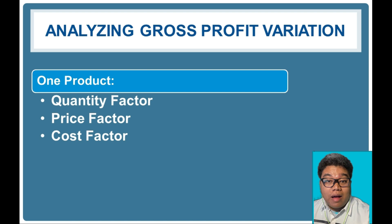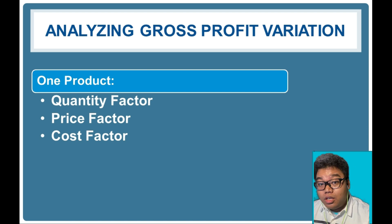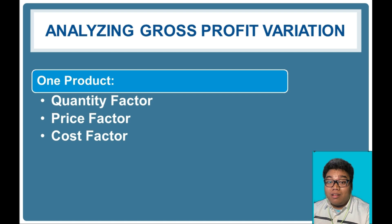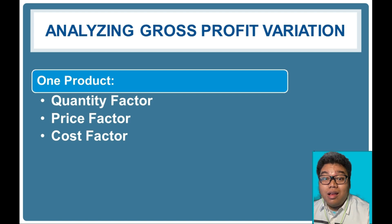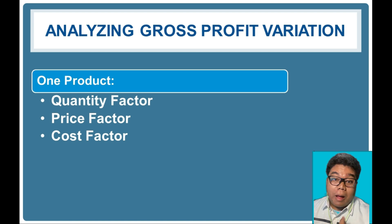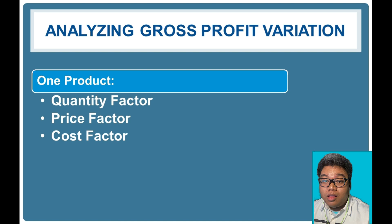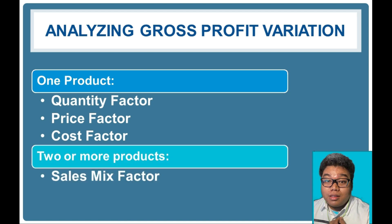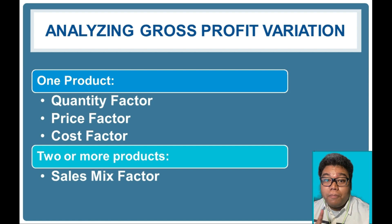When we analyze gross profit variation with only one product, we consider the quantity factor — the change in gross profit brought about by the change in units sold; the price factor — brought about by the change in selling price; and the cost factor — the change in gross profit brought about by the change in cost of units sold. If we have two or more products, we also consider the sales mix as a factor.